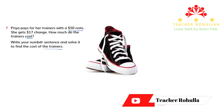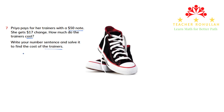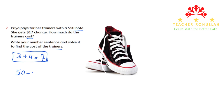A mathematical number sentence is a sentence that has numbers and signs. For example, 3 plus 4 equals 7 — that is a number sentence. For this problem, the number sentence is: $50 minus the trainer's cost equals $17, because $17 is the amount she gets back.